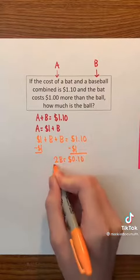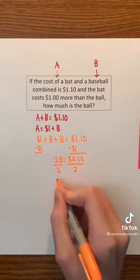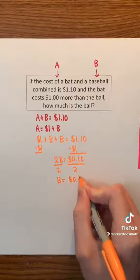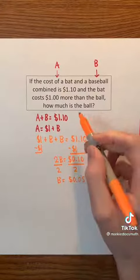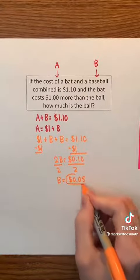Lastly, we just need to divide both sides by 2 to see that B equals $0.05. Therefore, the cost of the ball must be $0.05.